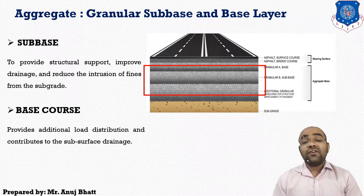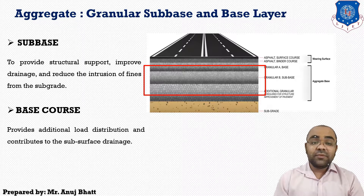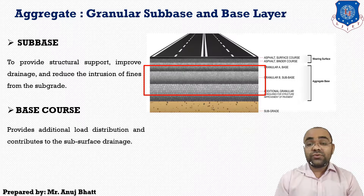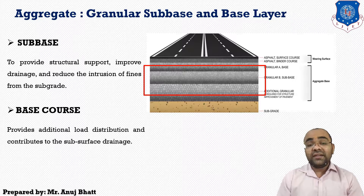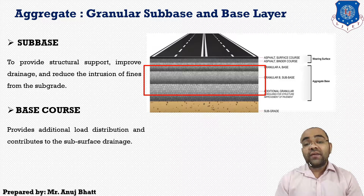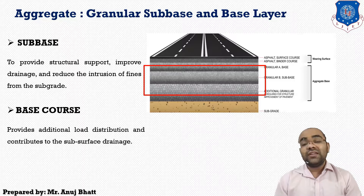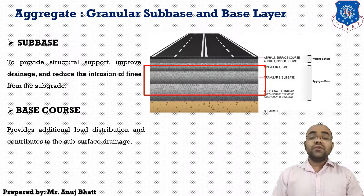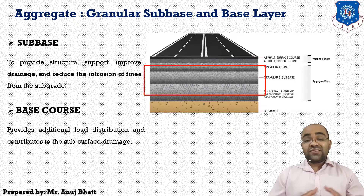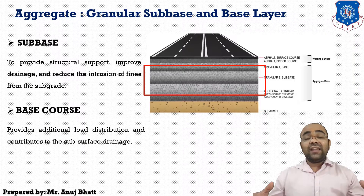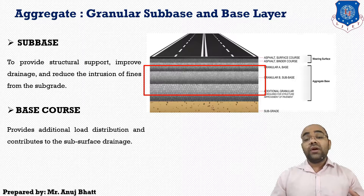The general thickness of the base course varies from 10 cm to 30 cm. The width of the base course is generally kept 30 cm more than the width of the bearing course, so that the extra width can easily transfer the load to the layers below.